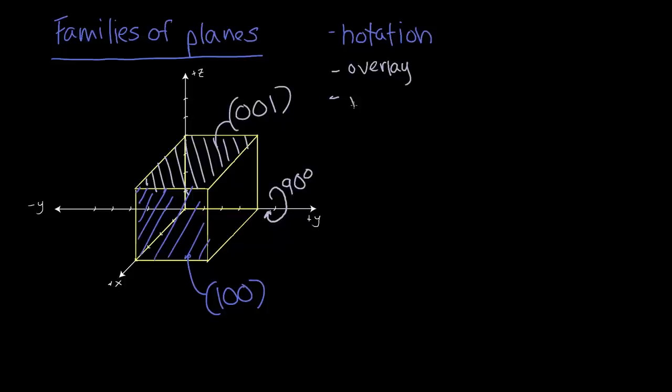And if it's possible, just by turning our cube, by rotating it, to overlay the two different planes, in this case the 100 and the 001 plane, we say that they are a member of the same family of planes.